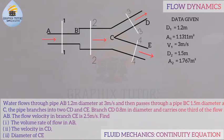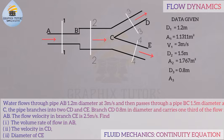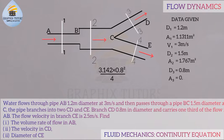Moving to section CD, which is section 3, the diameter is D₃ = 0.8 meter. The area for section 3 is A₃ = π D₃² / 4 = 3.142 × (0.8)² / 4 = 0.50272 m².